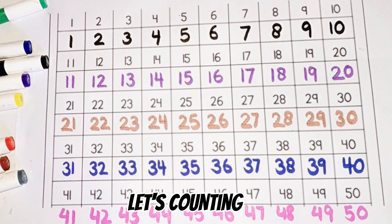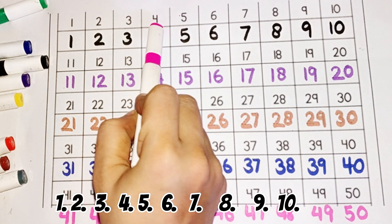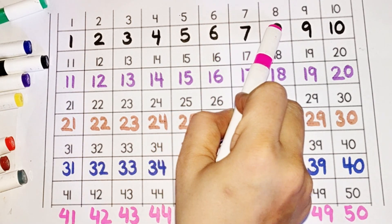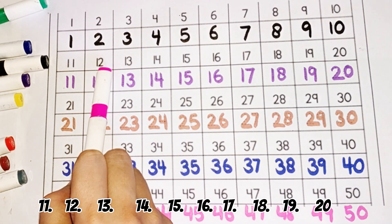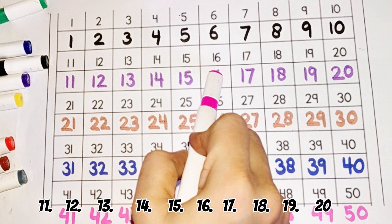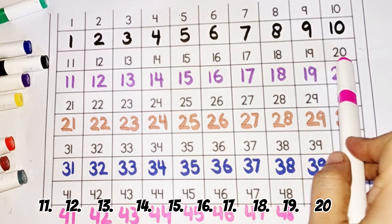Let's counting. One, two, three, four, five, six, seven, eight, nine, ten, eleven, twelve, thirteen, fourteen, fifteen, sixteen, seventeen, eighteen, nineteen, twenty.